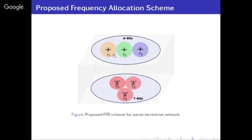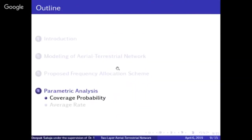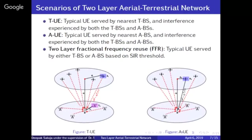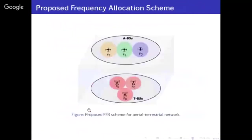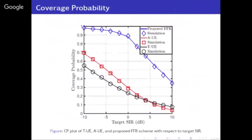The reason behind this is that if the signal is coming from an aerial BS, the interference has a line-of-sight component, so we must apply frequency reuse at the aerial side, not the terrestrial side. Basically, if the user is happy with the TBS, it is served by TBS; if not, we use the aerial BS.